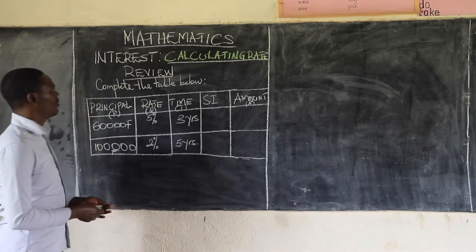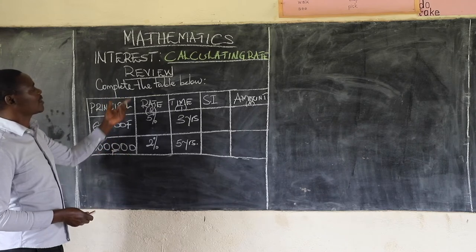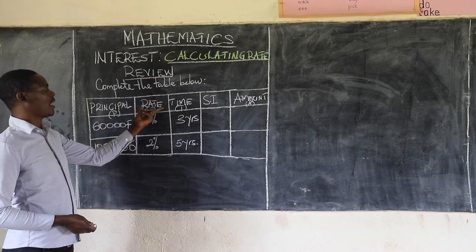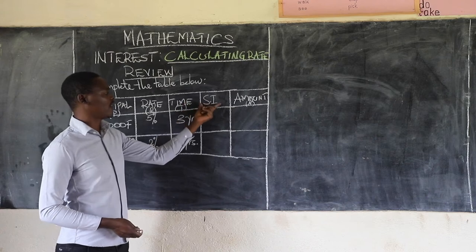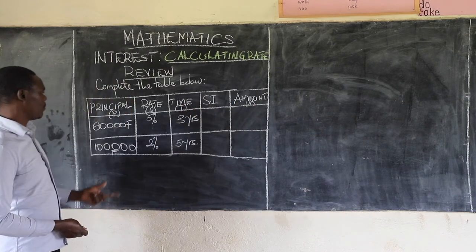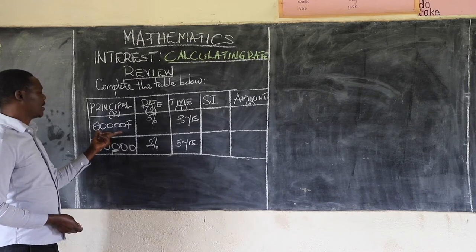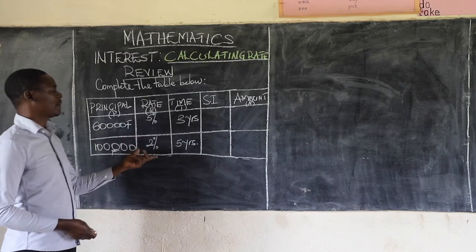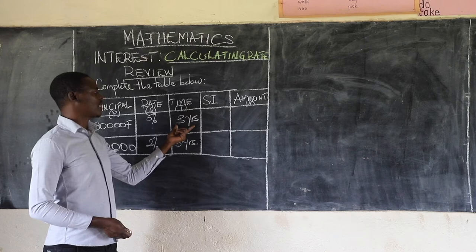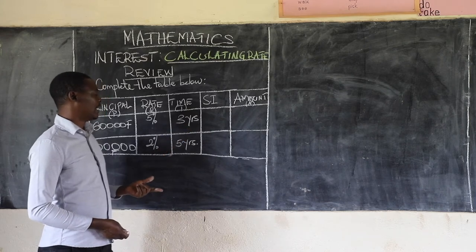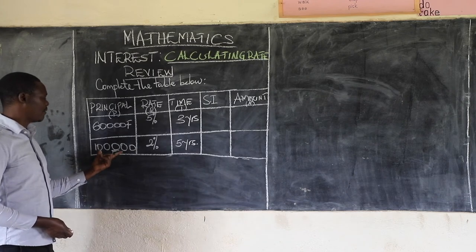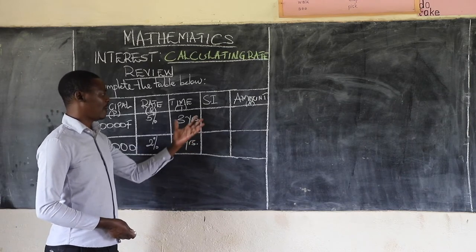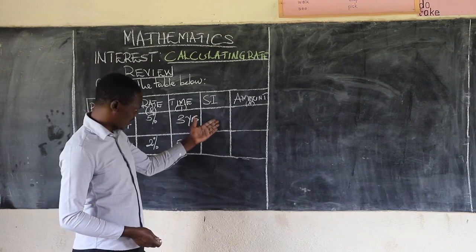As you can see on the chalkboard, we are told to complete the table below. We have columns for principal, rate, time, simple interest, and amount. In example A, the principal is 60,000 francs, the rate is 5%, and the interest is calculated after 3 years. In example B, we have 100,000 francs, rate 2%, and time 5 years. We have to find the simple interest and the amount.